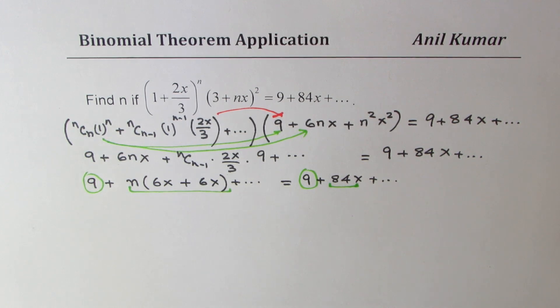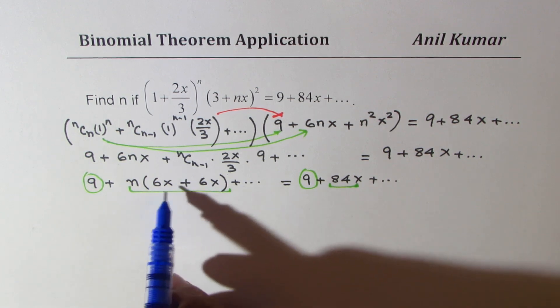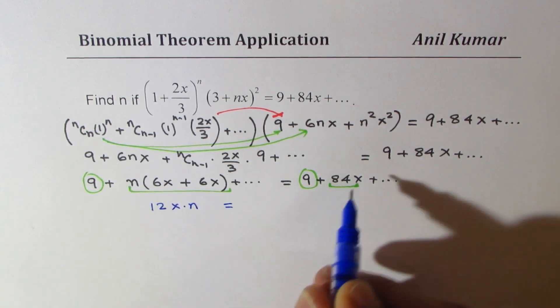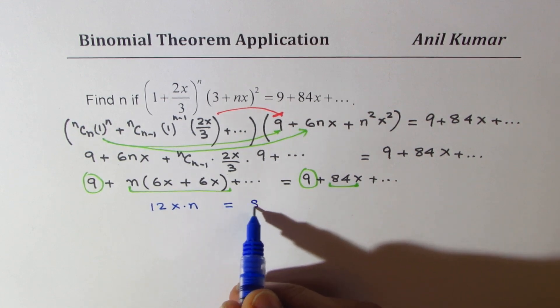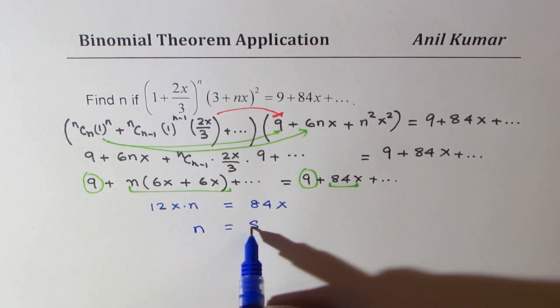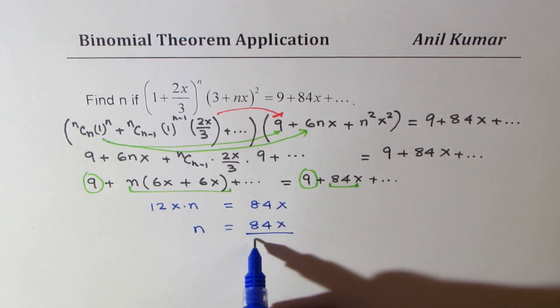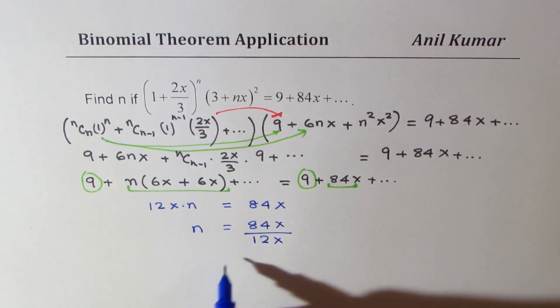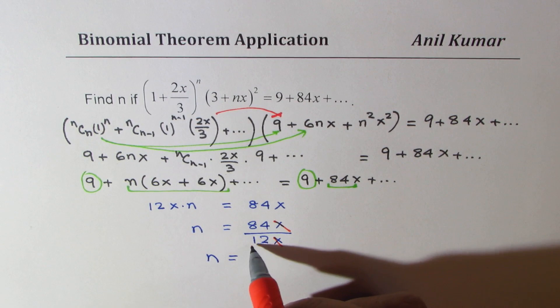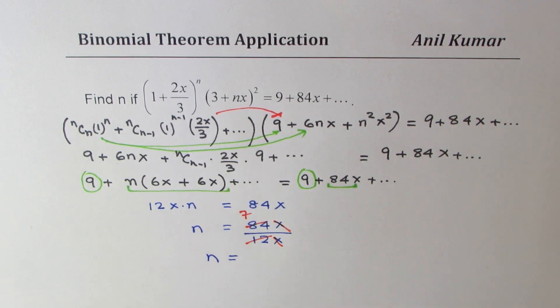But this term we can equate to 84 and find the value of n. So from here, we can actually equate 6x plus 6x is 12x. So we can write 12x times n equals 84x. Now we can find what n is. So n is 84x divided by 12x. So that gives us the value of n as, so x and x cancel, and 84 goes 7 times. So we get the value of n as equal to 7.